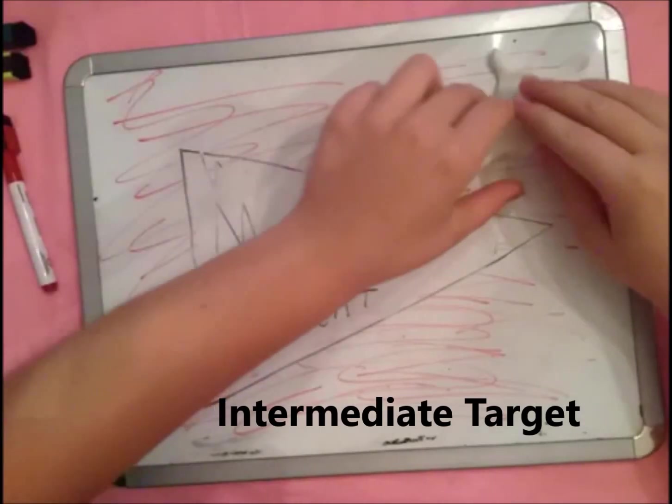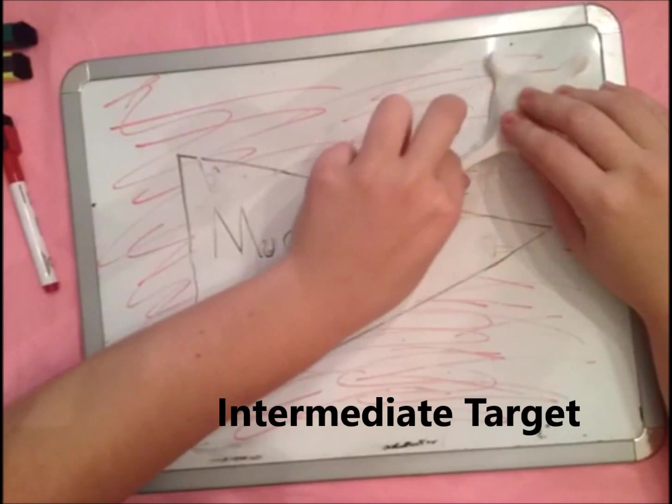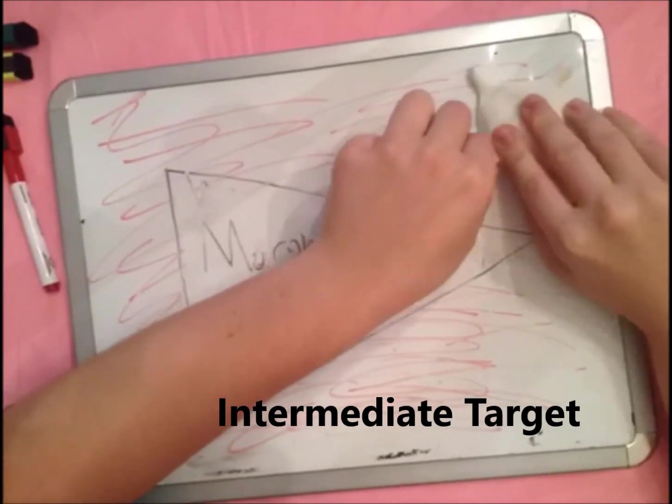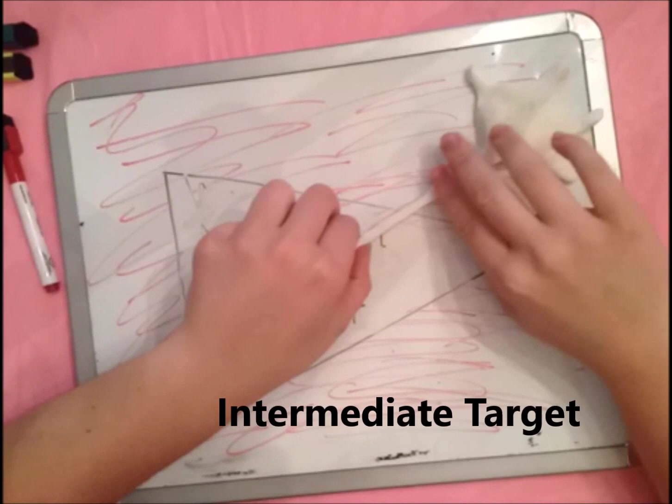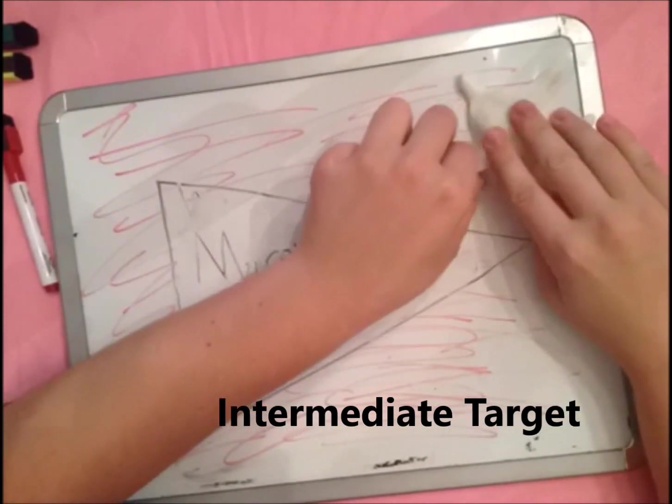Axons grow through tissues called an intermediate target. Intermediate targets often secrete the proteins that tell the growth cone where to go, playing an important role in making sure the growth cone, and by extension the axon, finds the correct target.